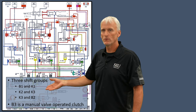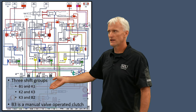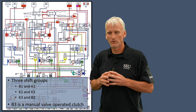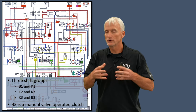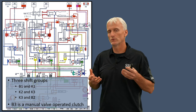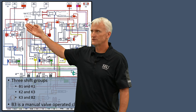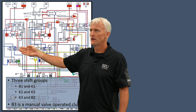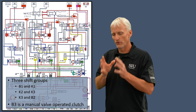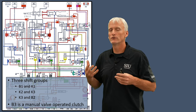There's a shift group for the B1 and K1 clutch, a shift group for the K2 and K3 clutch, and a shift group for the K3 and B2 clutch. These shift groups are responsible for applying the applying clutch and controlling the rate of apply, as well as controlling the rate of release for the releasing clutch. They do that through the operation of four valves: a command valve, a holding valve, a shift pressure valve, and an overlap valve for each group.